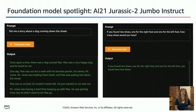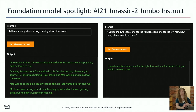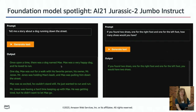One more foundation model spotlight: AI21 is an AWS partner, their models are available on the SageMaker Foundation Model Hub, and they're also an AWS customer. The AI21 Jurassic 2 Jumbo model — jumbo meaning north of 100 billion parameters — takes a prompt: 'tell me a story about a dog running down the street,' and generates this cute story about a dog named Max who loved to run. Once he was out for a walk, Mr. Jones was holding his leash. Max pulled him down the street. Max was excited — he just wanted to run.